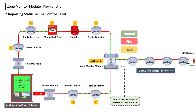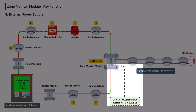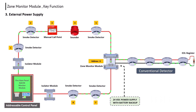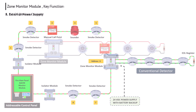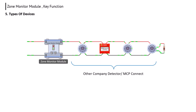Third function — external power supply: in some companies the zone monitor module needs a separate power supply, and in some companies zone monitor modules are loop-powered, meaning no extra power is needed. Fourth — number of devices: the zone monitor module can connect a maximum of 15 detectors or MCPs; the exact number is defined by the manufacturer. Fifth — types of devices: any smoke detector, heat detector, multi-detector, and MCP can be connected to the zone monitor module.